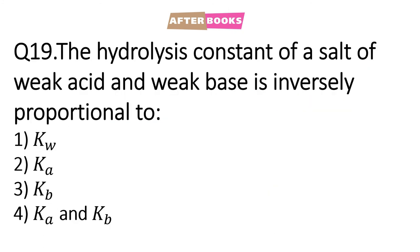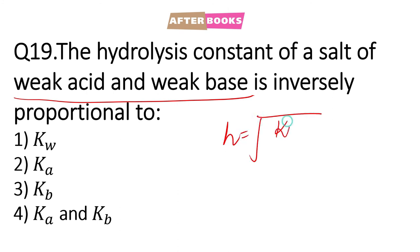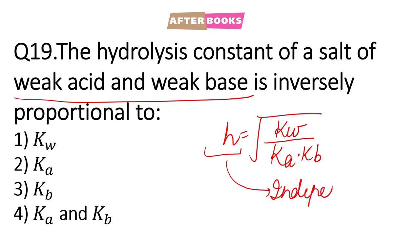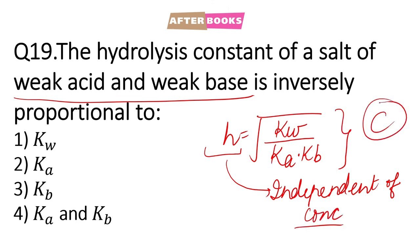Question number 19: The hydrolysis constant of a salt of weak acid and weak base is inversely proportional to what? For weak acid–weak base, the hydronium ion concentration involves √(Kw / Ka·Kb). The hydrolysis constant is independent of concentration C, as C is not involved. So the answer is: it is inversely proportional to Ka × Kb.